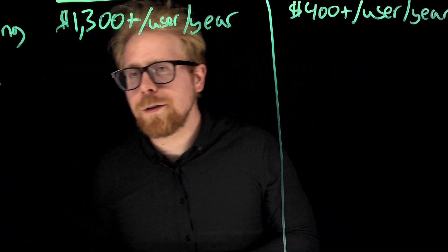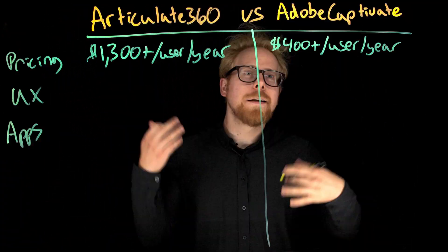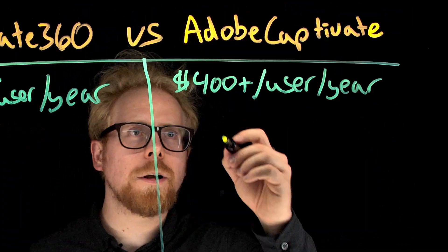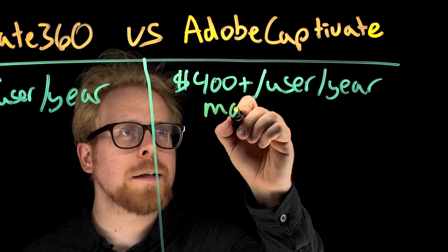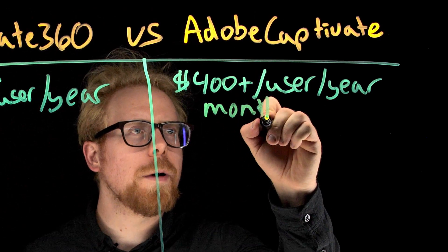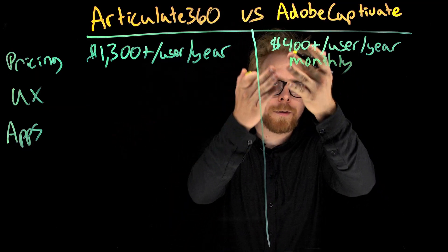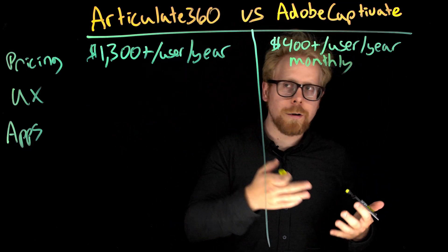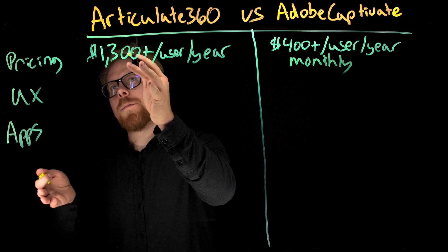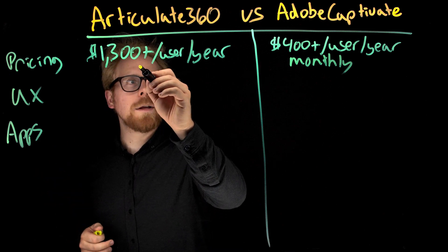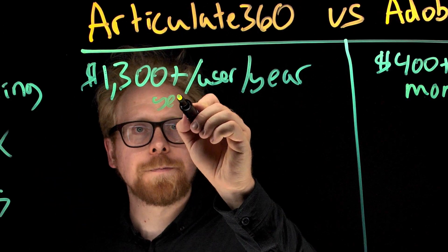Captivate also has monthly plans, so monthly you're going to pay whatever $400 divided by 12 is. Articulate only has yearly plans.